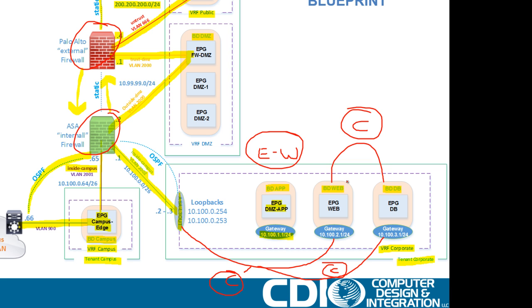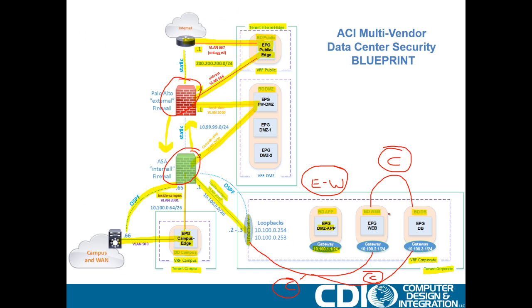We're going to come back to this network diagram as our blueprint and configure everything in ACI to support this design. Before we get started, I notice I have a typo — this should say 'inside data center.' So inside campus for the inside campus connection, inside data center for the inside data center connection, and outside DMZ for the DMZ connection. Let's get started.